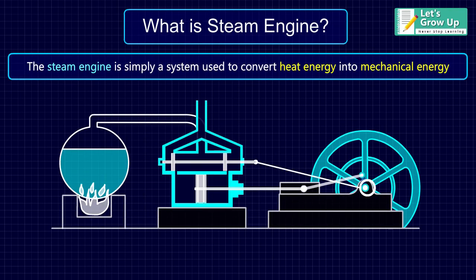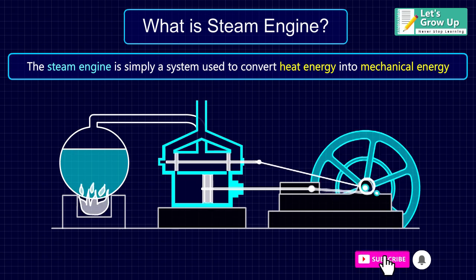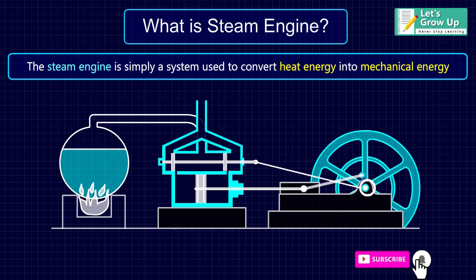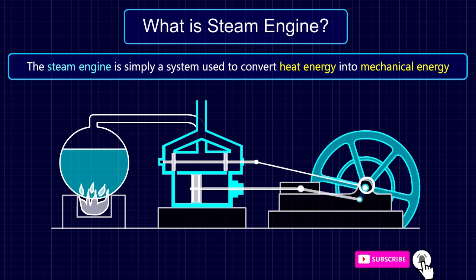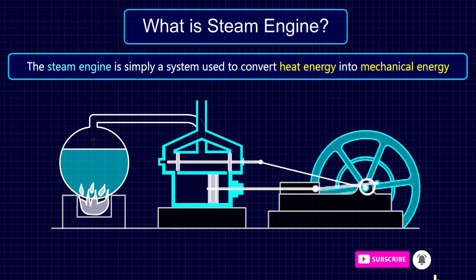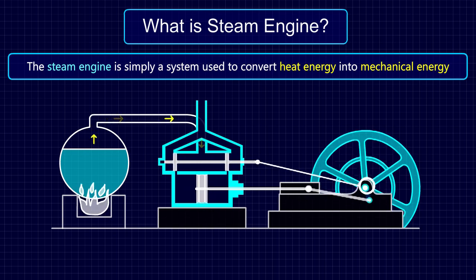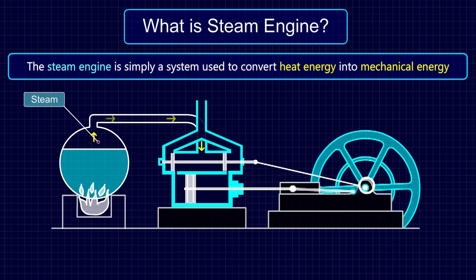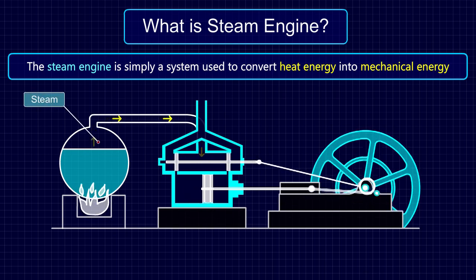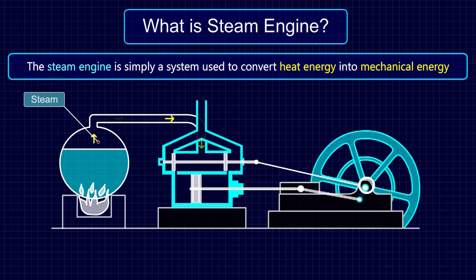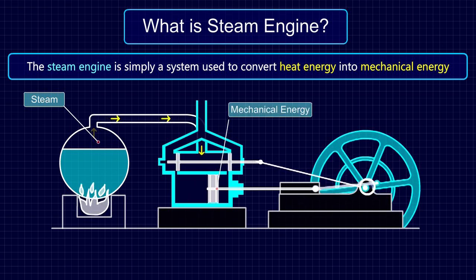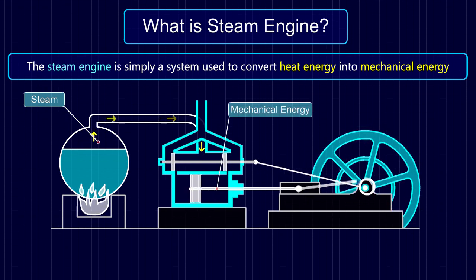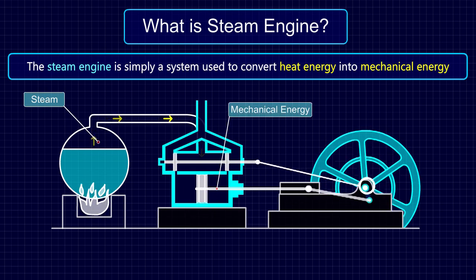The steam engine is simply a system used to convert heat energy into mechanical energy. It transfers steam into a cylinder to move a piston inside the cylinder back and forth. The movement of the piston allows the engine to perform mechanical work.